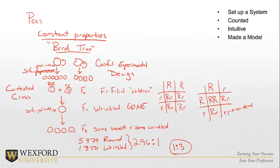Just like today, he sent his paper to be published and it went out for peer review to independent reviewers. But nothing happened — because he had made a model, and a model alone isn't enough. You have to be able to prove your model.